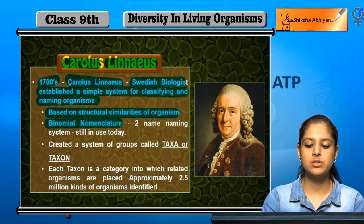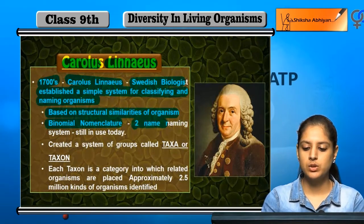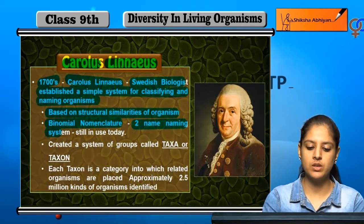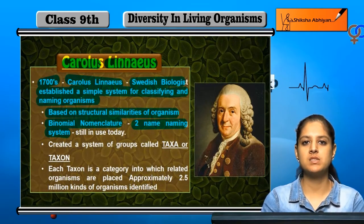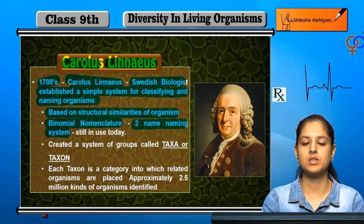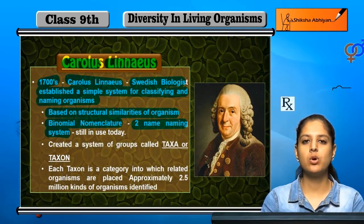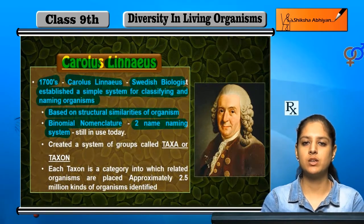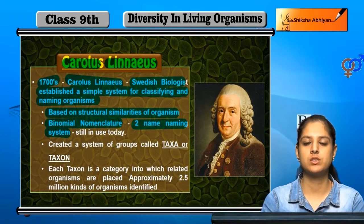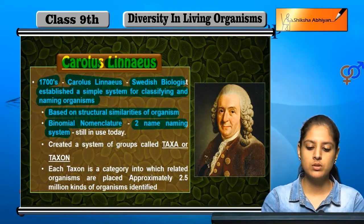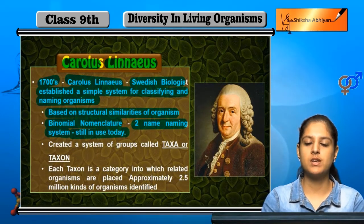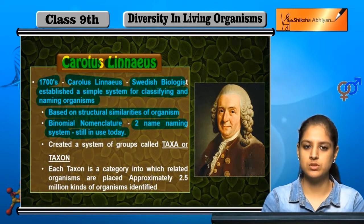Binomial nomenclature is a two-name naming system. For example, human beings are called Homo sapiens. This two-word naming system is called binomial nomenclature, and it is still being used today.